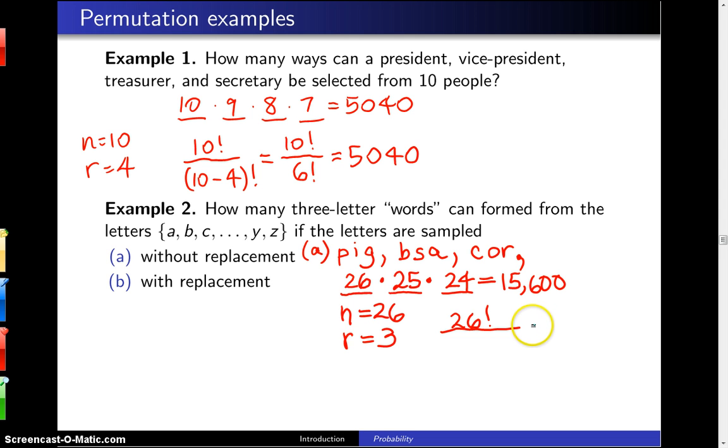This can also be written as 26 factorial divided by 23 factorial. If you'll notice that as things cancel here, 23 and down will cancel for the numerator and denominator. Since that's the case, this turns out to be just 26 times 25 times 24, which is 15,600, just as in the multiplication rule.